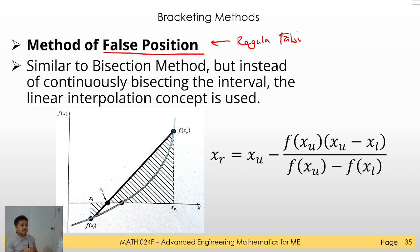Let's say you have an interval of XL and XU. To find a new approximate solution, instead of finding the midpoint like in bisection, we will try to find the line that connects the two function values. We find the equation of the line and then substitute y equals zero to find the x-intercept of this line.